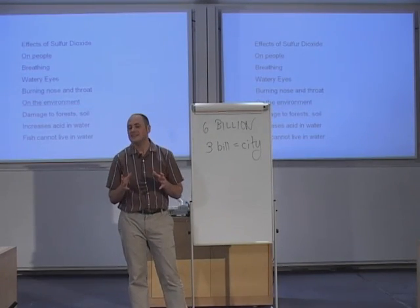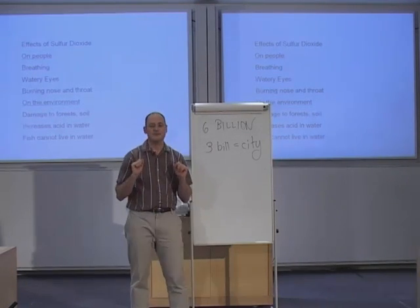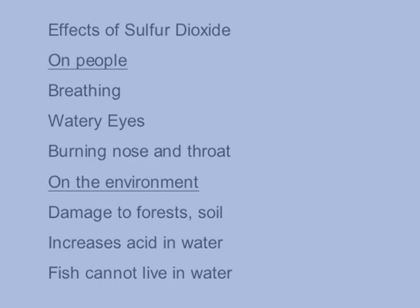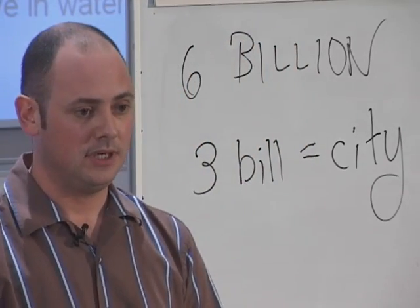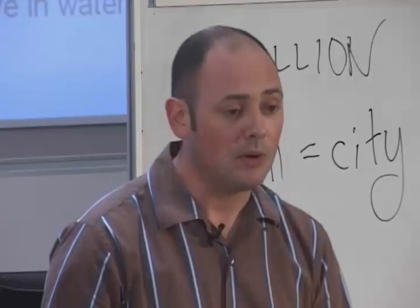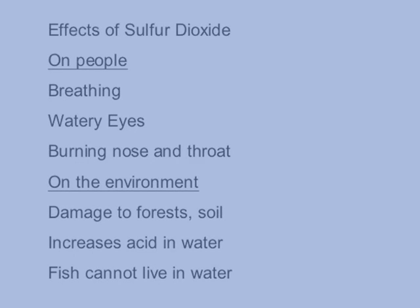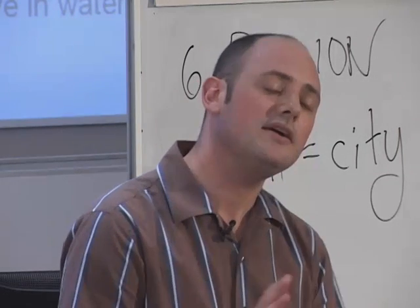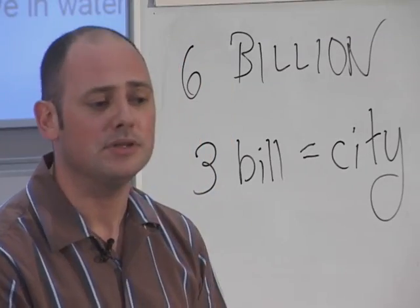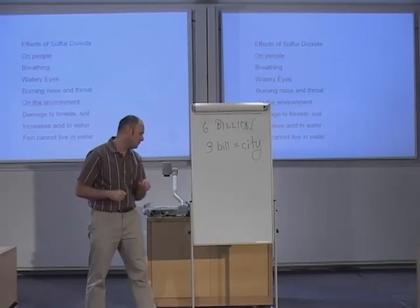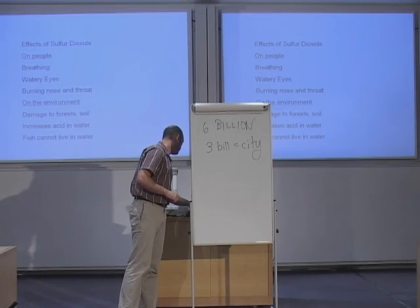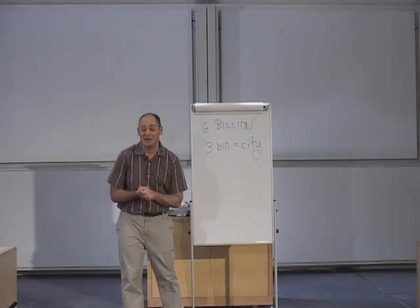Now let's look at the effects on the environment. Here are some examples. Sulfur dioxide in acid rain damages forests and growing things and even changes the soil — in other words, the ground the plants grow in. It also increases the acid level in water, meaning oceans, lakes, and streams, making them so acidic that fish and other living creatures cannot live in them. I think I've painted a general picture of how serious air pollution is and how terribly it affects every living thing. So let's turn our attention to what's being done about this problem.